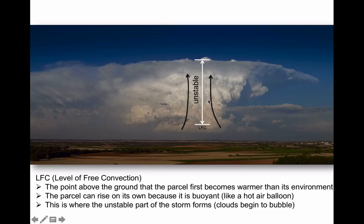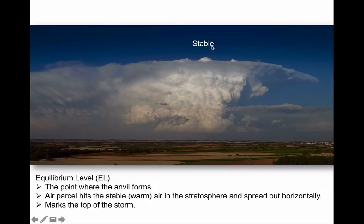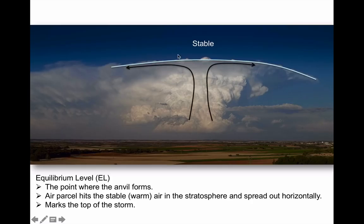As this air rises, it eventually slams into the stratosphere. When it does, the stratosphere is very stable because temperatures up there begin to warm again. You can't fly a hot air balloon into hot air, and it's the same with a rising parcel — the moment it hits that very stable stratosphere layer, it must spread out horizontally, creating the anvil cloud. We also call this in atmospheric sciences the equilibrium level.